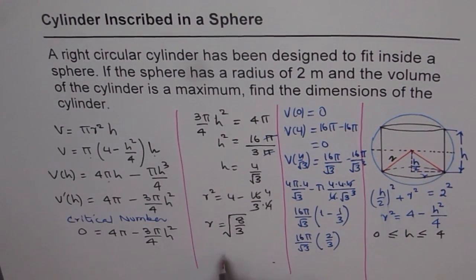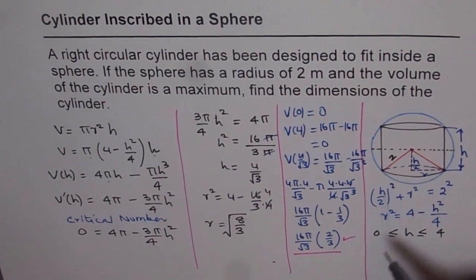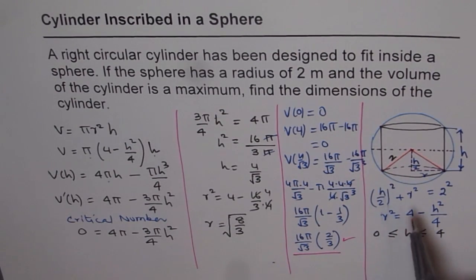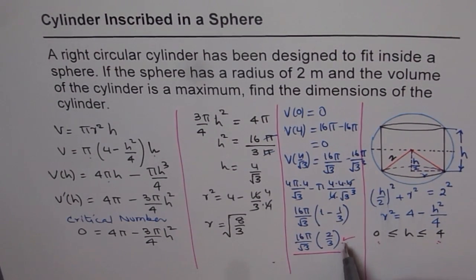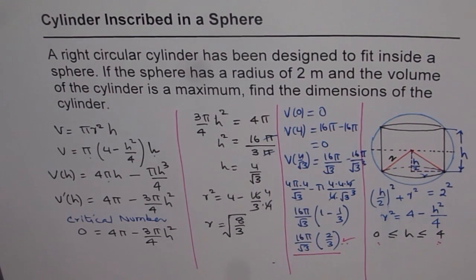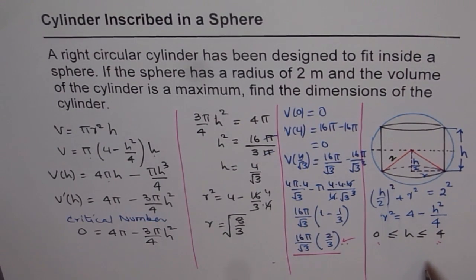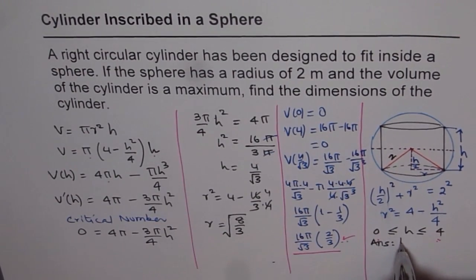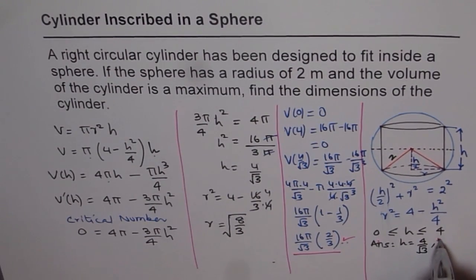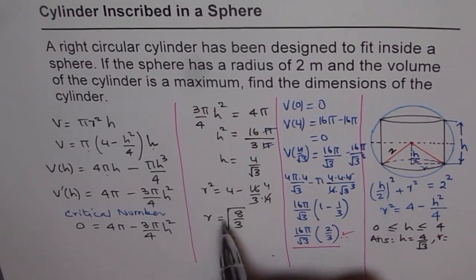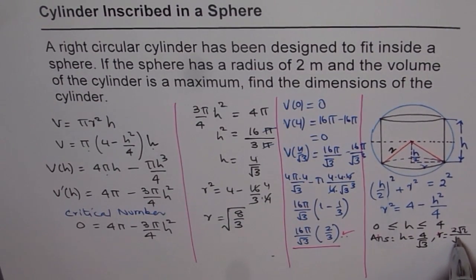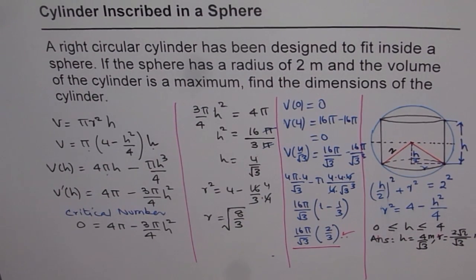Since this is a positive number, here we have the maximum. The critical point we found indeed gives the maximum value. It is important to show these calculations and say we have checked all values — at the boundaries and at the critical number — and among all those values, that is the maximum. Therefore, for height = 4/√3 and radius = √(8/3), we get the maximum volume of the cylinder. Our final answer is height = 4/√3 meters and radius = 2√2/√3 meters.